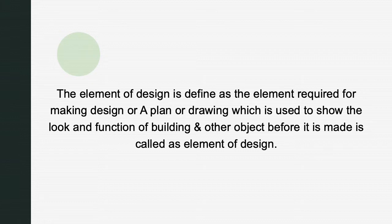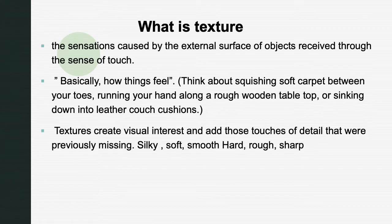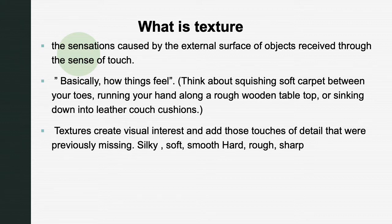The element of design is defined as the element required for making a design, plan, or drawing which is used to show the look and function of a building or other object before it is made. Texture is an element of art — it is the surface quality or feel of an object. Smoothness, roughness, and softness are examples. Texture may be actual or simulated. Actual texture can be felt with the fingers, while simulated or visual texture is suggested by an artist in the painting of different areas of a picture.